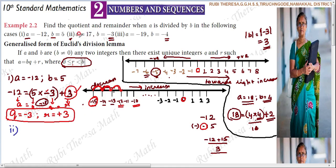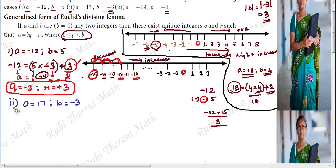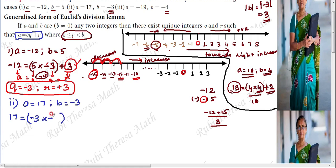Second subdivision: A equals 17, B equals minus 3. A is your dividend and B is your divisor. Applying the statement: 17 equals minus 3 into Q plus R. Since minus into minus gives plus, we look for a positive product near 17.